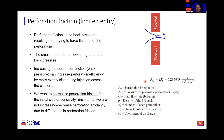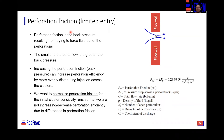Finally, that brings us to perforation friction, sometimes called limited entry. Perforation friction is the back pressure that results from trying to force fluid through a hole. If the left-hand side of this image is the inside of my casing and this slot is my perforation, as I force fluid out of that perforation there is a pressure drop — that is this concept of perforation friction. The smaller the area open to flow, the greater the back pressure. The equation shows that perforation friction scales with the square of flow rate and the inverse of the square of the number of perforations, the diameter, and the coefficient of discharge.